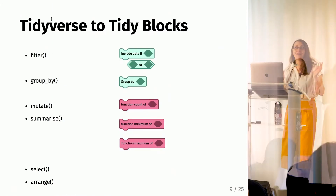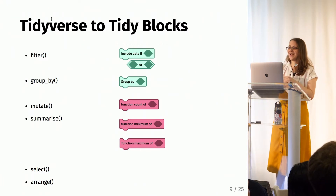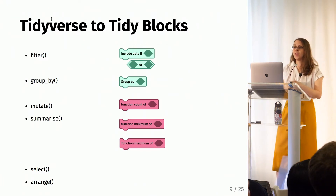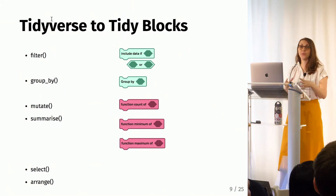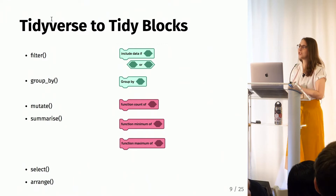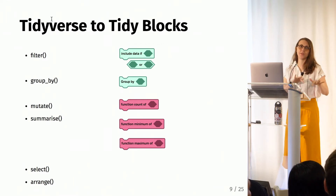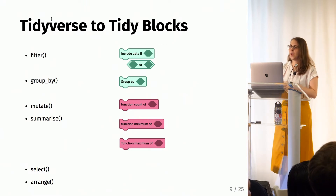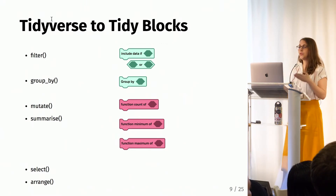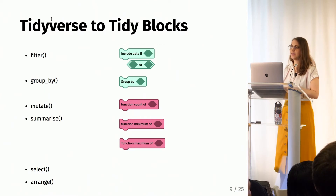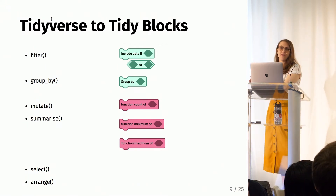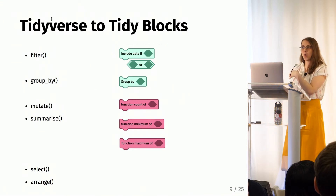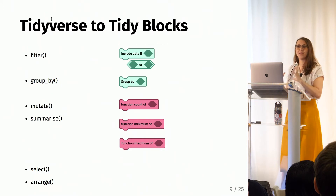Here we have our beloved central verbs of dplyr and the blocks we've developed thus far. First, we have filter — we decided we absolutely needed it in the UI, but we changed it to have a more explicit name since students don't have to type it out. We renamed it 'include data if,' so it's super clear what it is. Right now, if you put two 'include data if' blocks one after another, it's like an implicit AND, and we do have an explicit OR block — though we're still thinking through this.